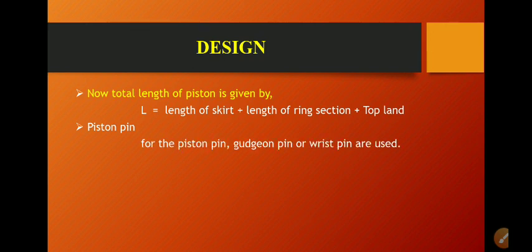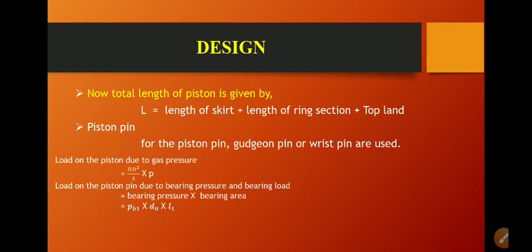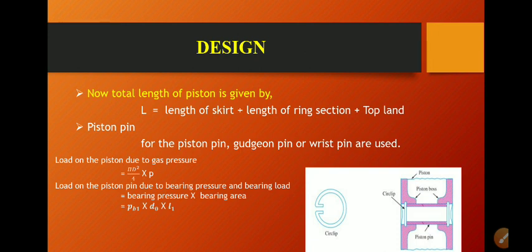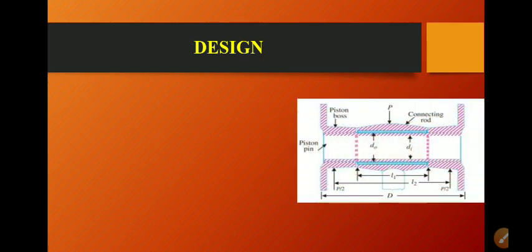When designing the piston pin, the gudgeon pin and wrist pin are generally used for vehicles. The load on the piston due to gas pressure is taken as pi times D² divided by 4, times P. The load on the piston pin due to bearing pressure is taken as bearing pressure times bearing area, which is Pb1 times Do times L1. The piston pin connects the piston with the small end of the connecting rod.